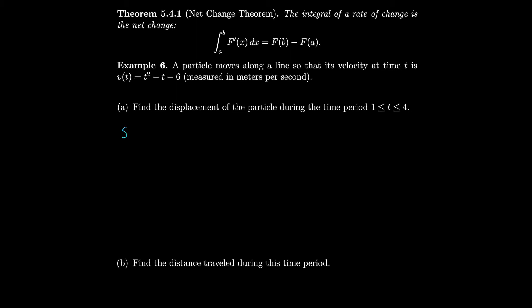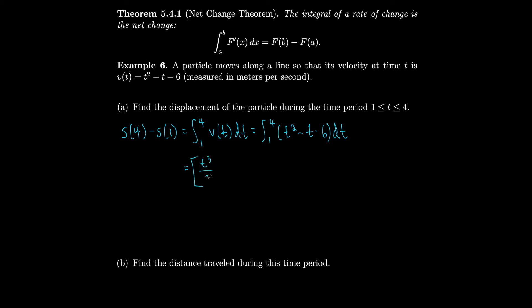The displacement is the change in position: s(4) minus s(1). This equals the integral of velocity from one to four, since velocity is the derivative of position. So that's the integral from one to four of (t² minus t minus 6) dt, which is t³/3 minus t²/2 minus 6t, evaluated from one to four. Plugging in four and subtracting by plugging in one gives negative 9/2 — the particle moved four and a half meters to the left.